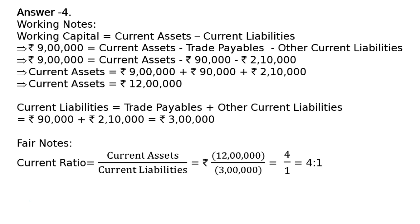Current ratio equals current assets upon current liabilities, that is rupees 12 lakhs upon rupees 3 lakhs, which equals 4 upon 1, that is 4:1. This is the final answer.